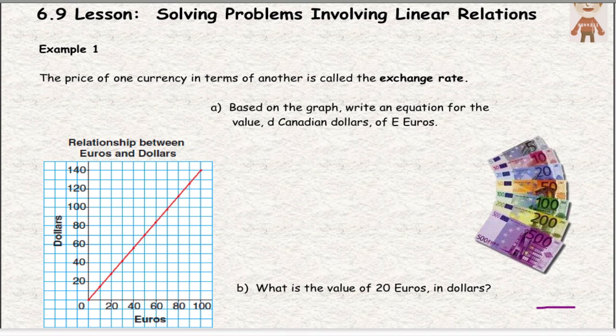Based on the graph, write an equation for the value of Canadian dollars in euros. So D represents Canadian dollars and E would represent euros. We need to figure out the exchange rate. The value of our money is different when you're in Canada compared to how much Canadian money is worth if you go to the United States. If we're going to Europe and looking at euros, we want to look at the graph and figure out what the exchange rate is.